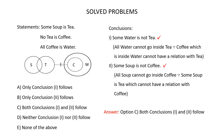In this question there are 3 statements and 2 conclusions. To find out which of these conclusions follow, first we have to draw a Venn diagram for the statements. The statements are: Some soup is tea, no tea is coffee, all coffee is water. Some soup is tea means there has to be a partial overlap between soup and tea. No tea is coffee — draw a circle for coffee and draw a line with a cross from tea to coffee. All coffee is water means all coffee should be inside water. This is the Venn diagram for the given statements.